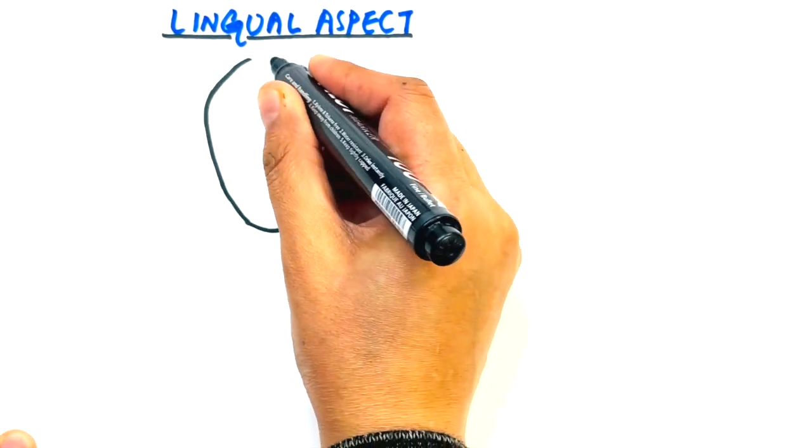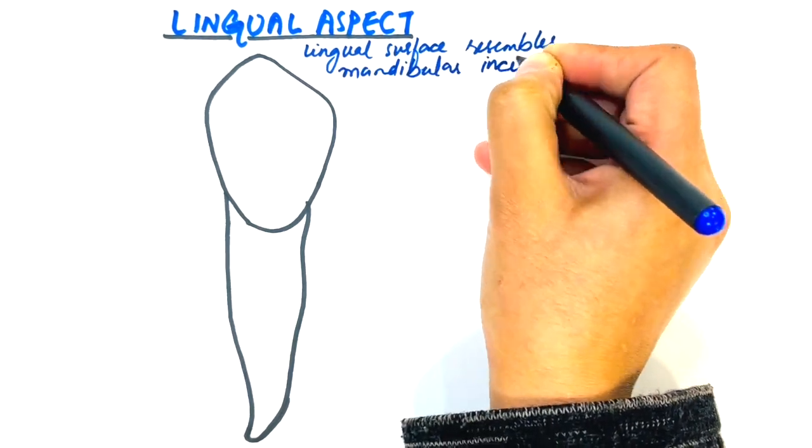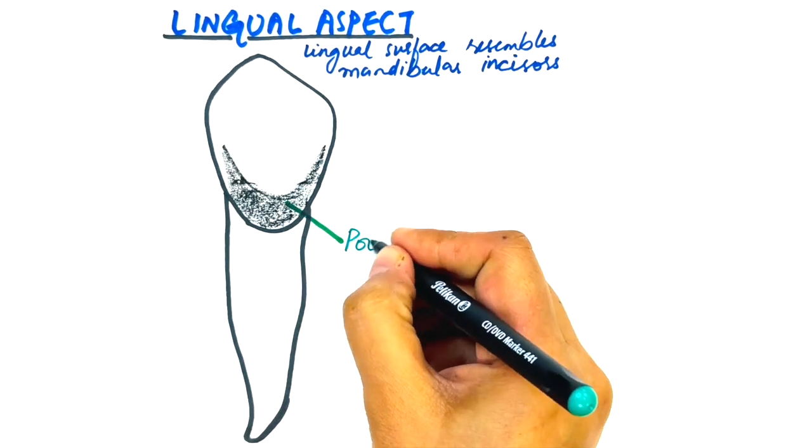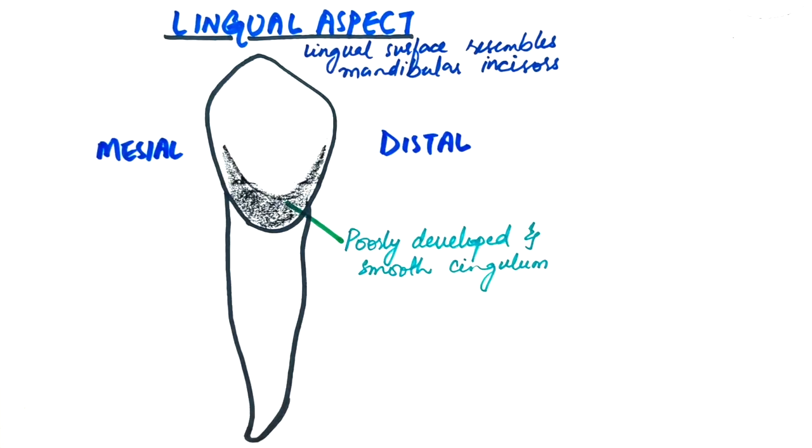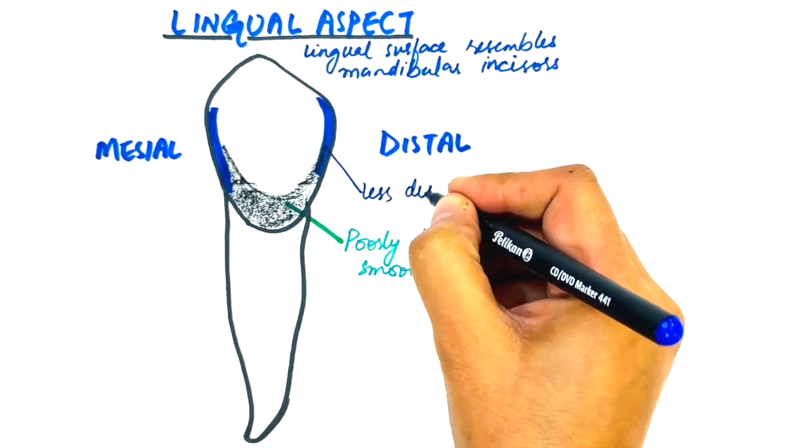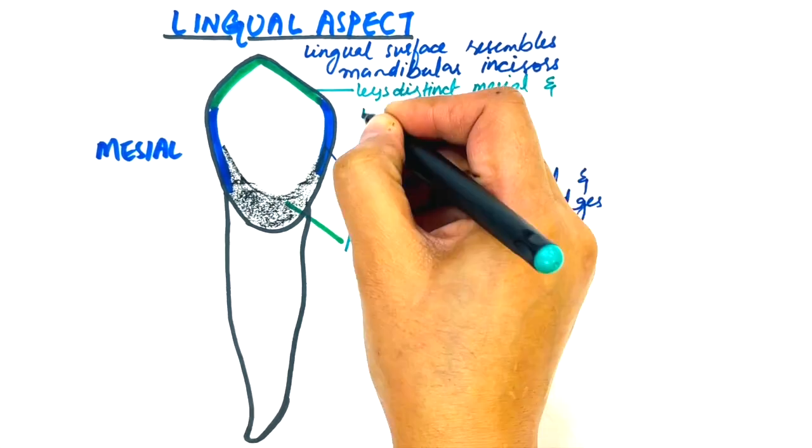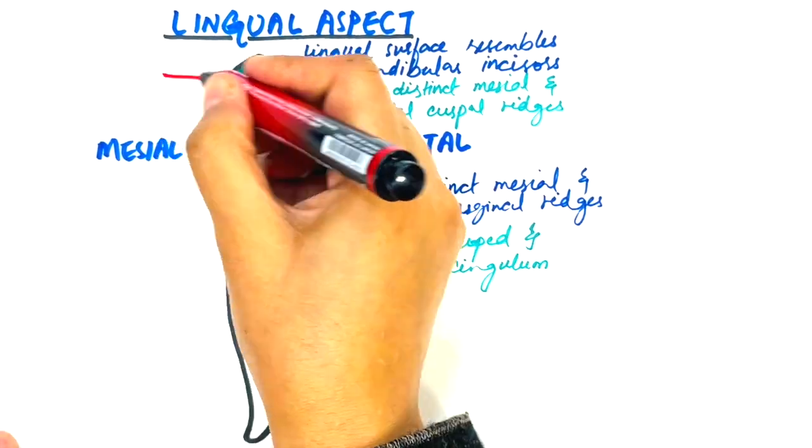The lingual surface of the crown is flatter and almost resembles lingual surface of the mandibular incisors. This feature is opposite of the maxillary canine, where we had prominent concavities and convexities on the lingual surface. The convexity formed here by the singulum is smooth and poorly developed in the mandibular canine. The mesial and distal marginal ridges are less distinct and so is the mesial and distal cuspal ridges. The lingual ridge which extends down from the cusp tip on the lingual surface is also less prominent compared with the maxillary canine. It is however raised at the incisal third only.